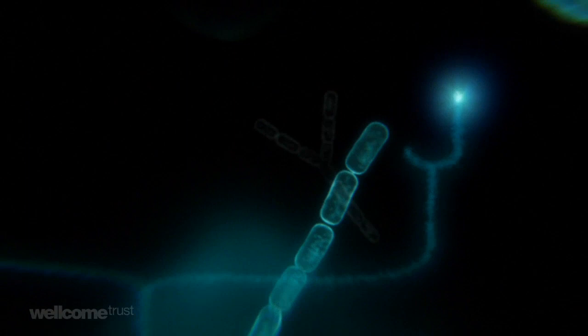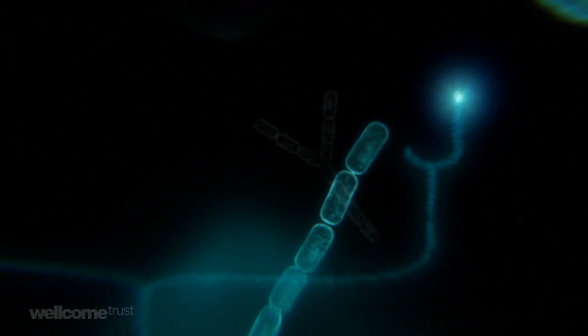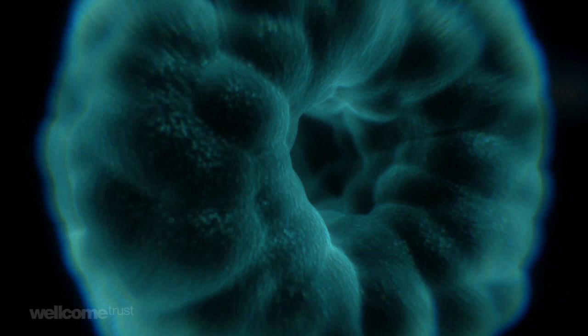Some remained attached to one another so that they formed chains. We know them today as algae. Others formed hollow balls which collapsed upon themselves, creating a body with an internal cavity. They were the first multi-celled organisms. Sponges are their direct descendants.